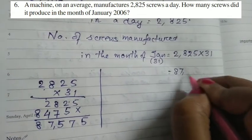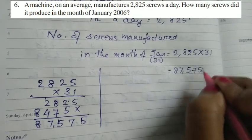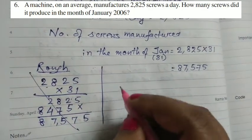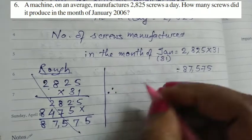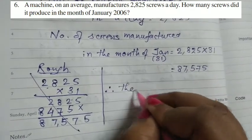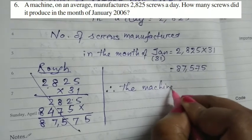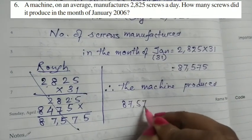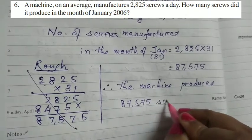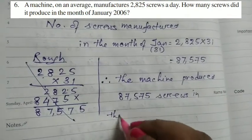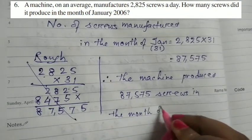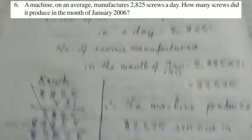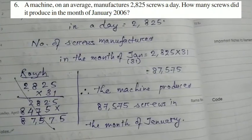That is equal to 87,575. You can do this portion in the form of rough. You can do this portion in the rough. Now, the answer is therefore, the machine produced 87,575 screws in the month of January. Now, let us come into the next question.